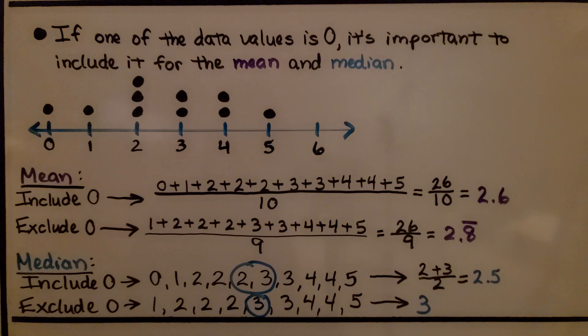If one of the data values is zero, it's important to include it for the mean and median. Here we have a dot plot, and we can see there's a zero included.